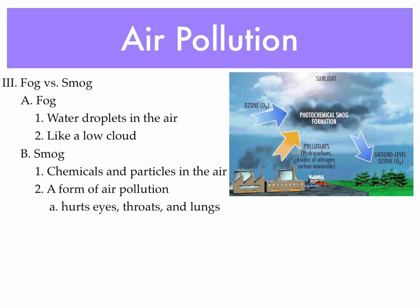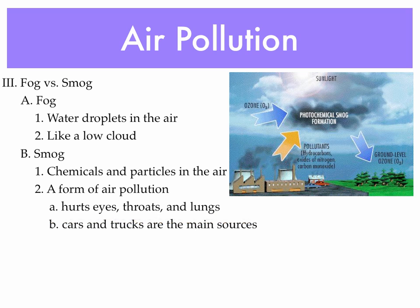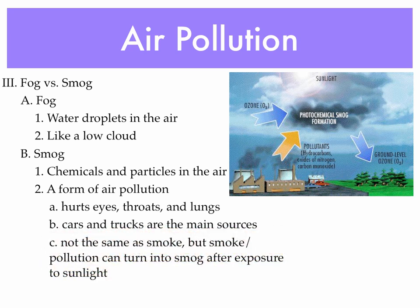Smog is pollution — it hurts your eyes, your throat, your lungs. The main sources here in Bangkok are actually cars, trucks, and buses. That big black cloud of smoke that comes out of the back of a bus is chemicals and particles getting into the air. It's these chemicals that go into the air and react with other chemicals as well as sunlight, turning into a kind of chemical cloud. It's what makes the city look kind of gray when you look out over Bangkok — that's not necessarily a cloud, that could very well be smog.